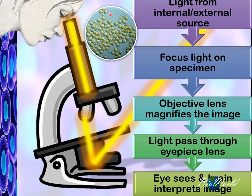For example, this is the image of flower pollen as seen through a light microscope. Later, I will show you what the flower pollen looks like under an electron microscope.